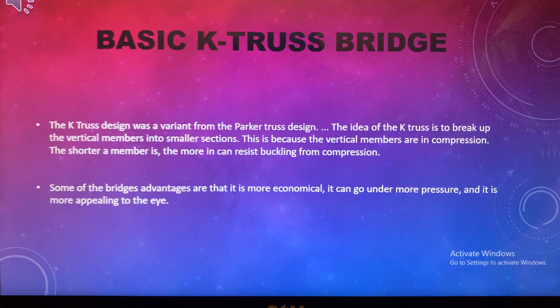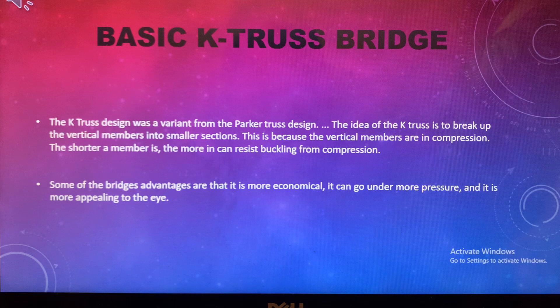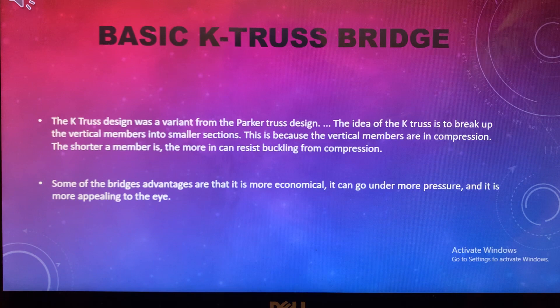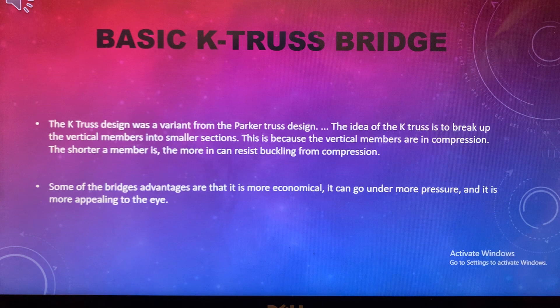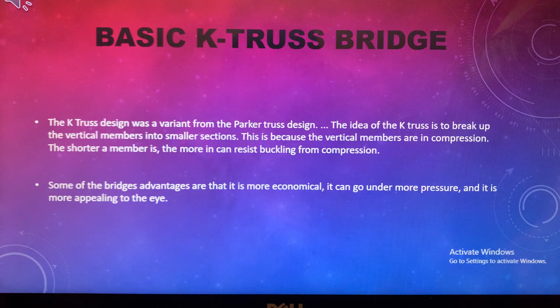The final bridge we're looking at is the K-truss. Rather than just looking like K's, the K-truss design was a variant of the Parker truss design. The idea of the K-truss is to break up the vertical members into smaller sections, because the vertical members are in compression — and the shorter a member is, the more it can resist buckling from compression. Some advantages are that it is more economical, can handle more pressure, and is more visually appealing.